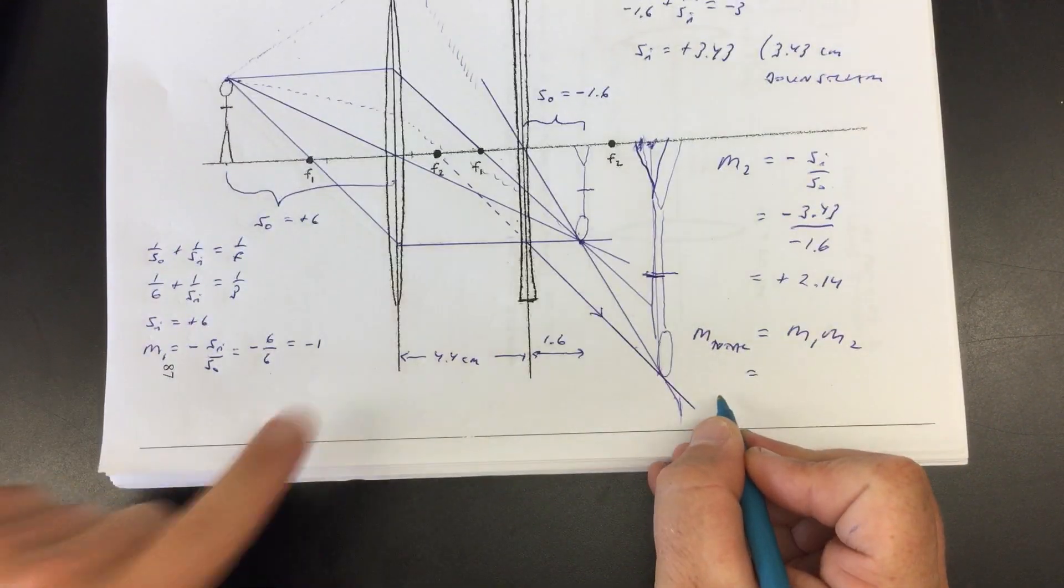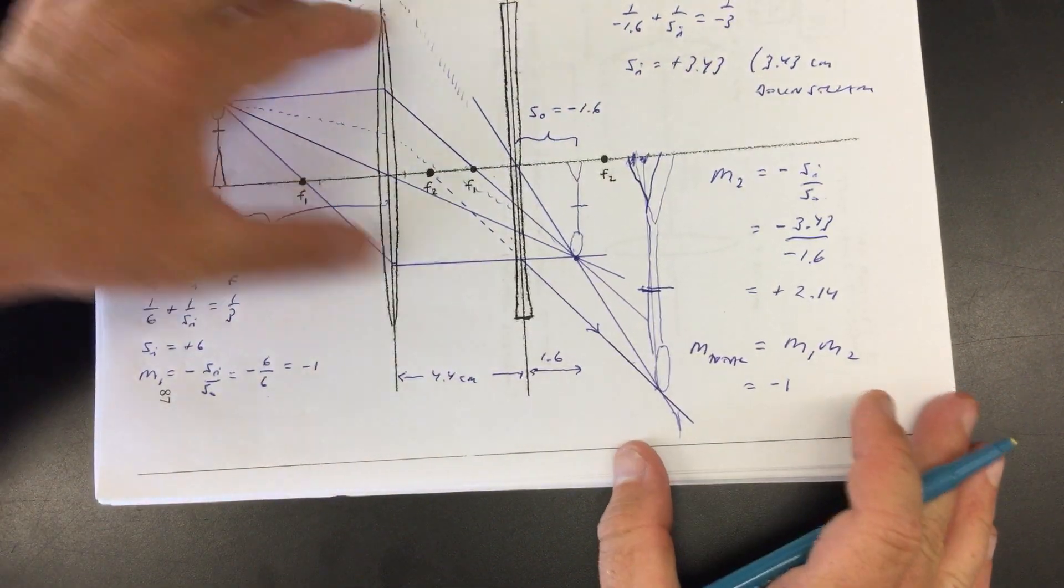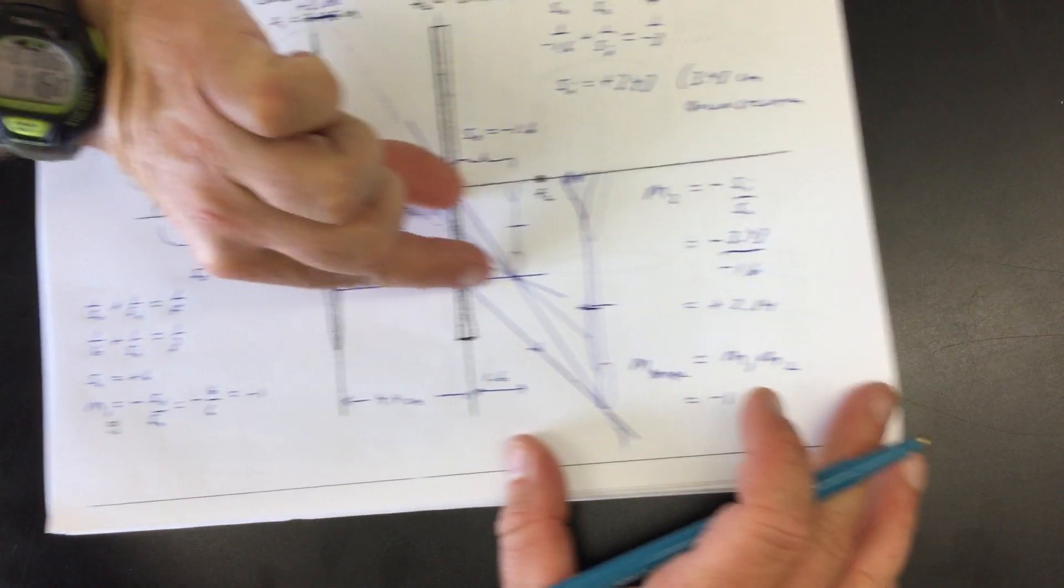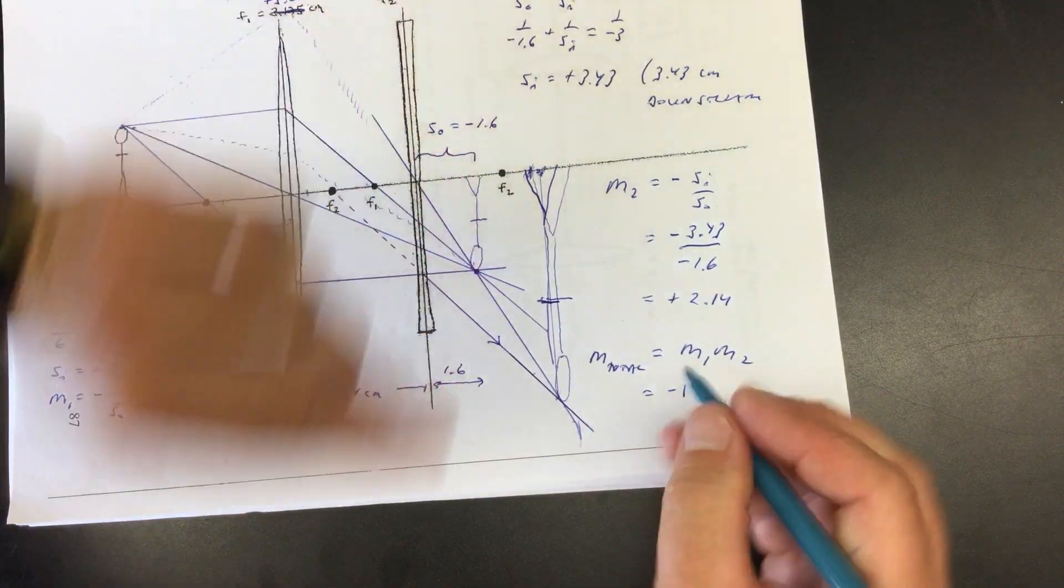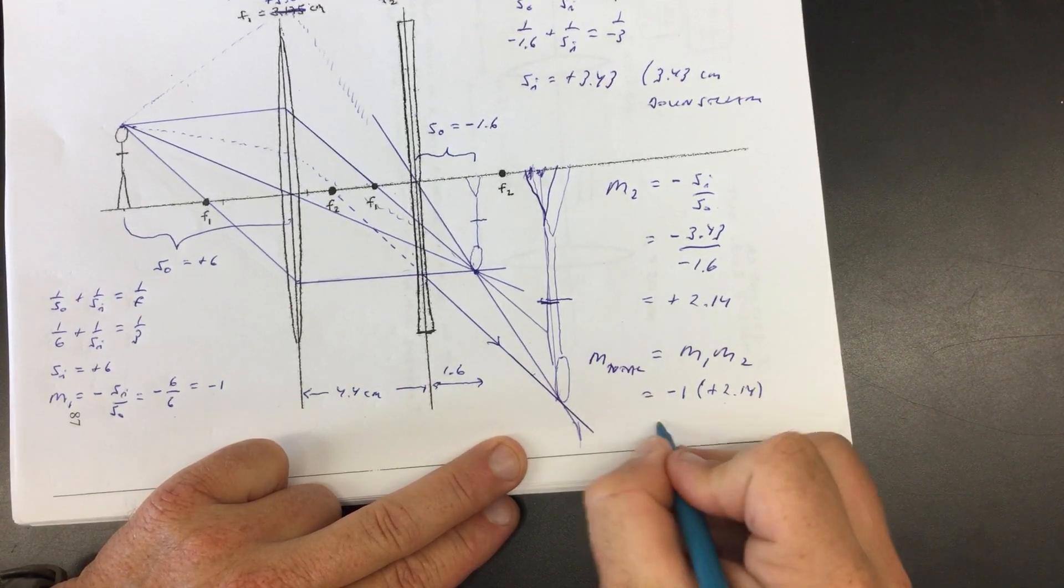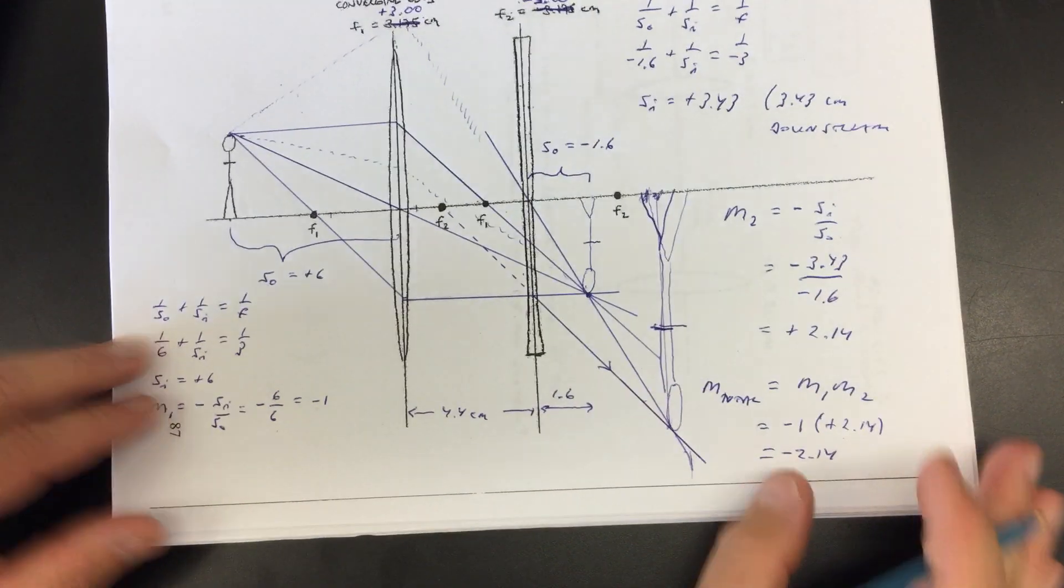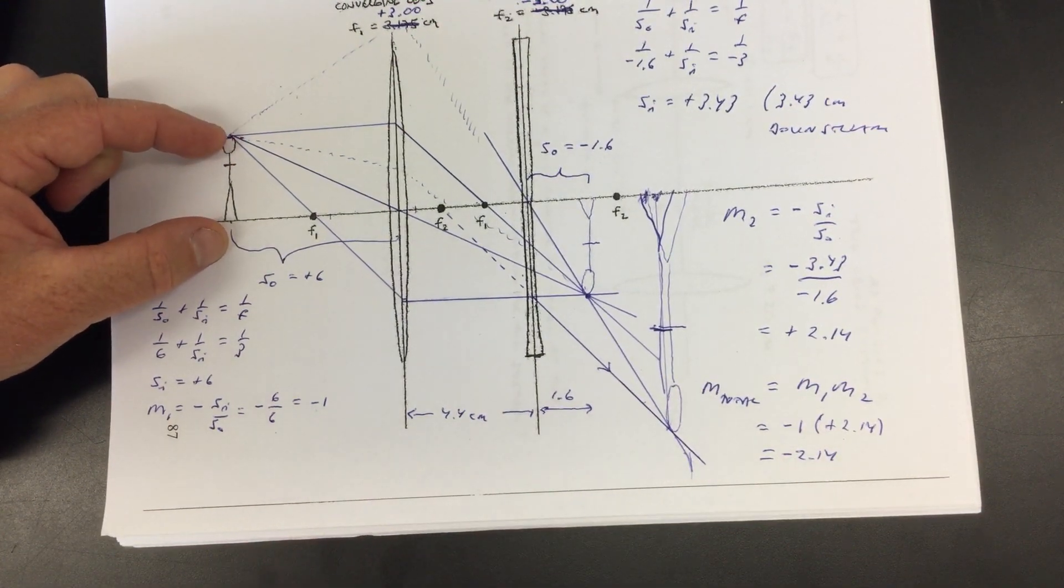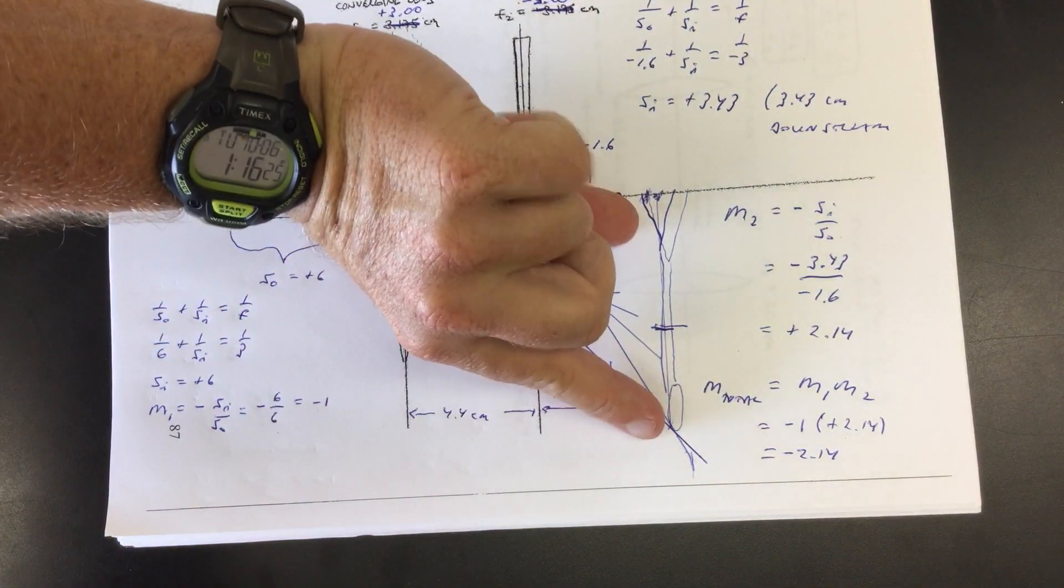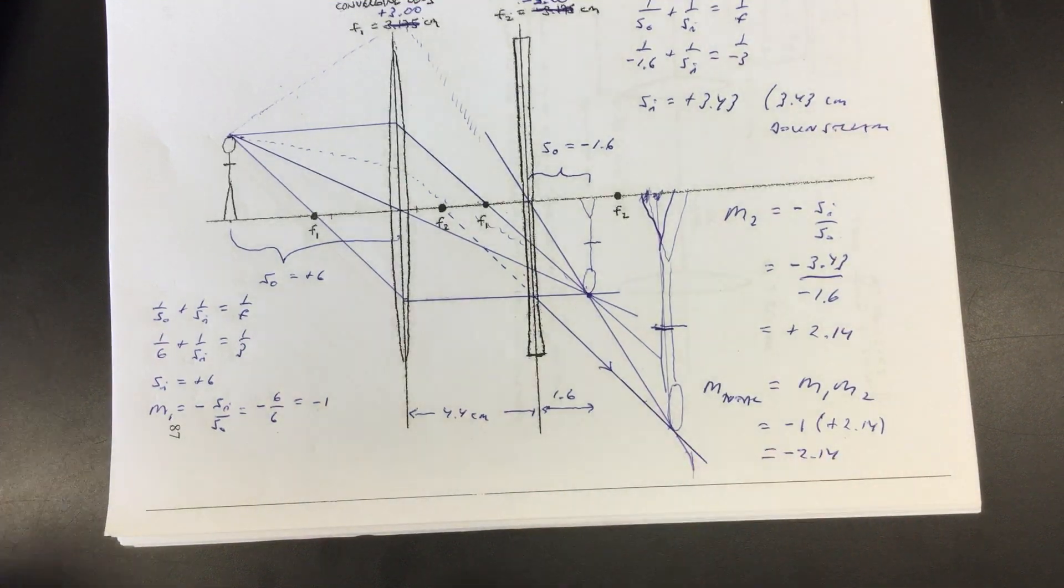Well, M1, if you remember, that was negative one. So that's what the first transformation was from the first lens. You put this input in and it makes it negative one, the size of what it was before. And then M2 is plus 2.14. And when you multiply those together, you get negative 2.14, right? Well, that makes sense. You started with this thing and you warp it by a factor of negative 2.14. So it's, it's 214% as big and it's upside down. So you can see that this kind of checks out.